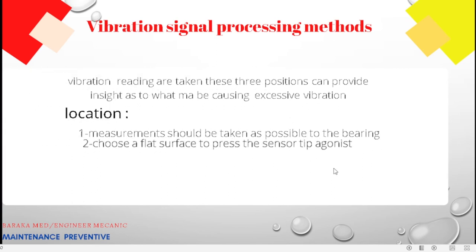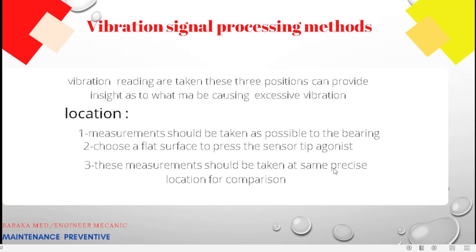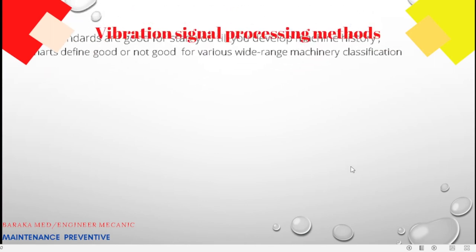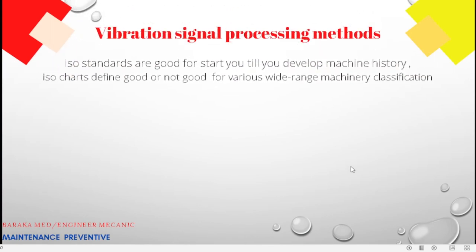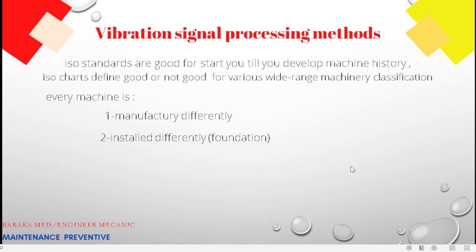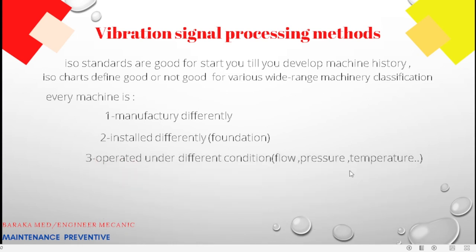Measurements should be taken as close as possible to the bearing, on a clean, flat surface. Regarding ISO standards: they are a good starting point. Until you develop your own machine history, ISO standards define good or not-good thresholds across a wide range of machinery classifications. Every machine is manufactured differently and operates under different conditions — flow, pressure, temperature — which must be taken into account.